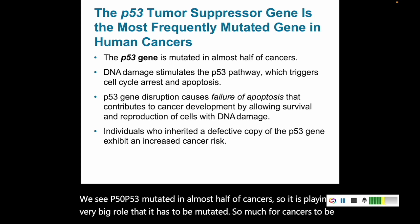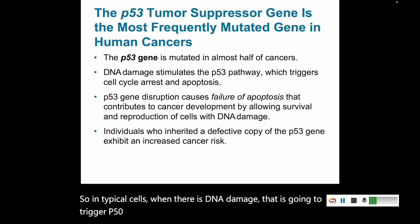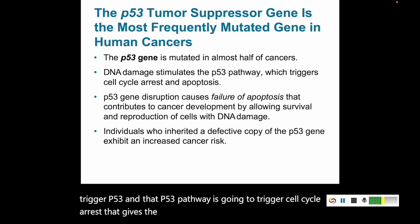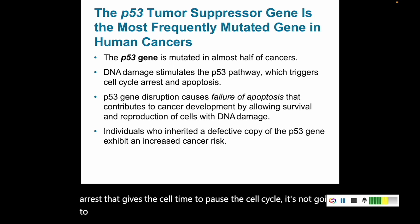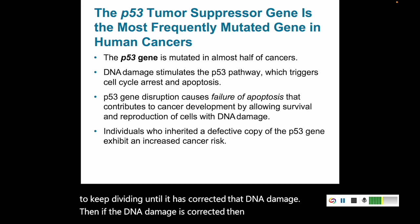In typical cells, when there is DNA damage, that is going to trigger P53. And that P53 pathway is going to trigger cell cycle arrest. That gives the cell time to pause the cell cycle — it's not going to keep dividing until it has corrected that DNA damage. Then if the DNA damage is corrected, the cell can go on doing what it needs to.